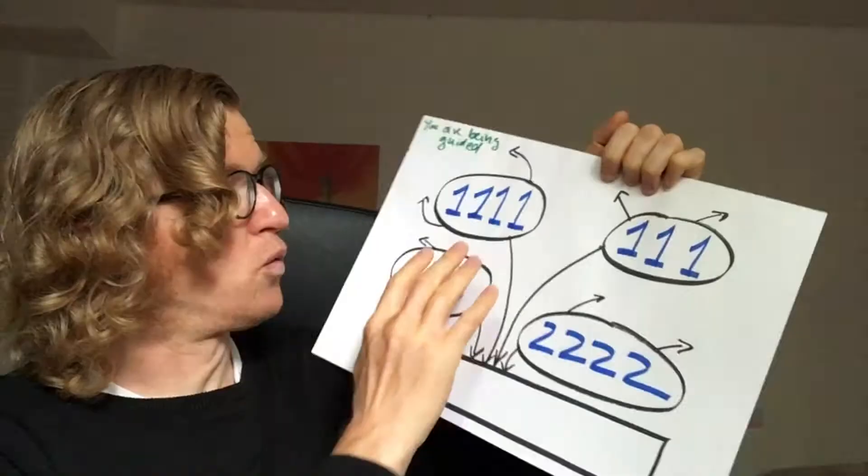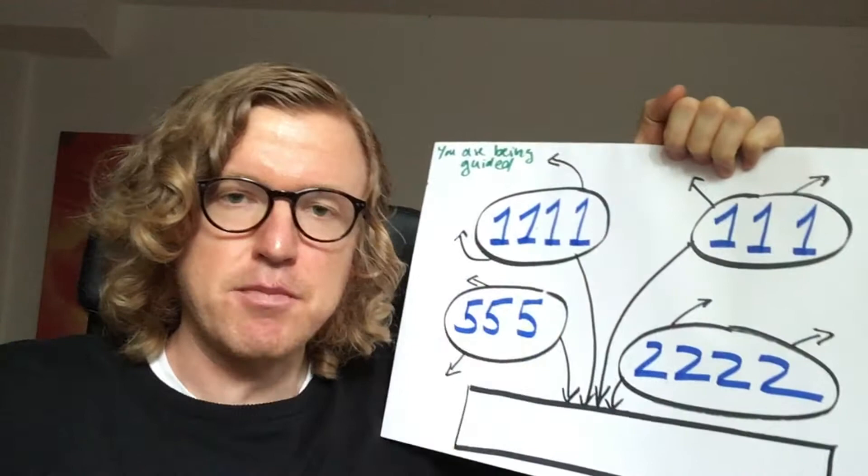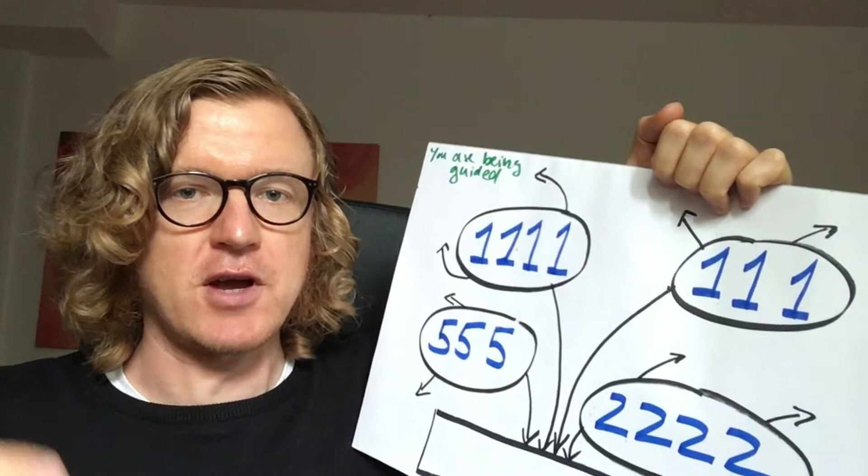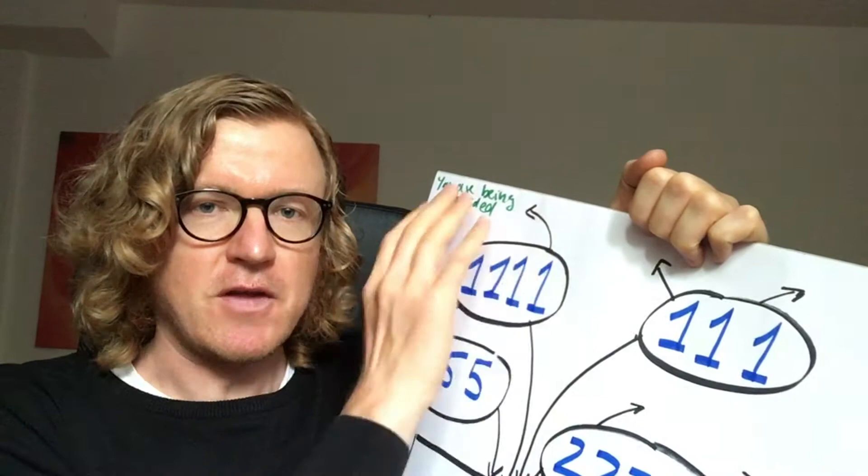One of the core meanings of seeing 1111 is that you are being guided. It means that you don't have to do all the work yourself, but you can outsource some of the work required to get to what you want or to resolve the challenges you're facing right now. You can outsource some of the work to the universe, the higher self, the universal consciousness, whatever you call it.